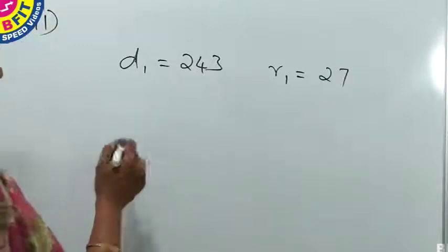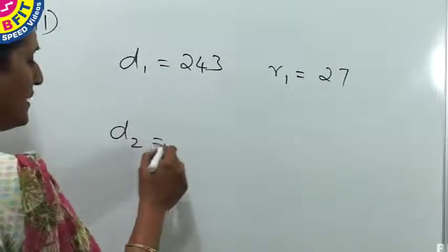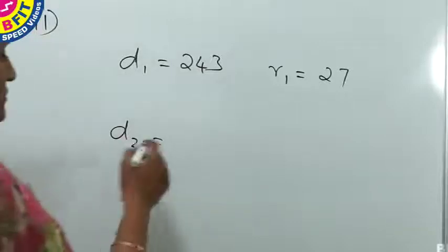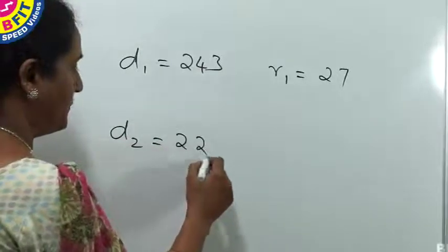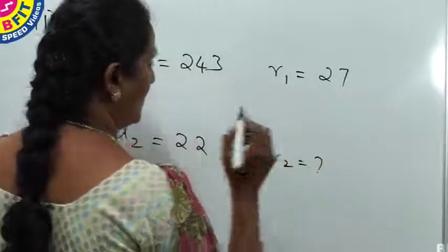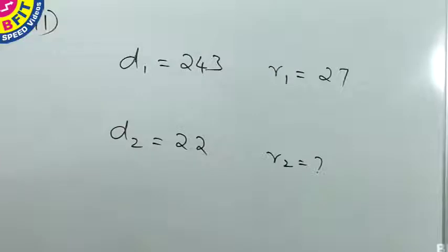If the same number is divided by 22, we have to find the remainder. Here, divisor 2, d2, is 22, and we are asked to find the remainder r2.